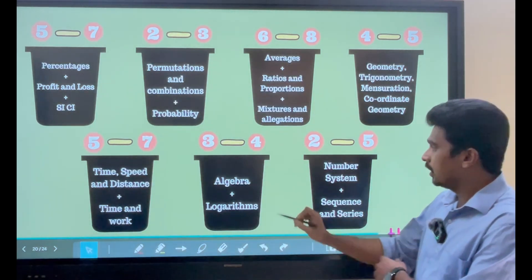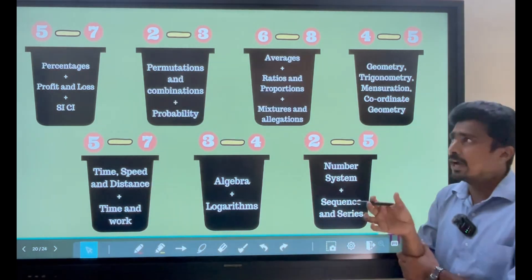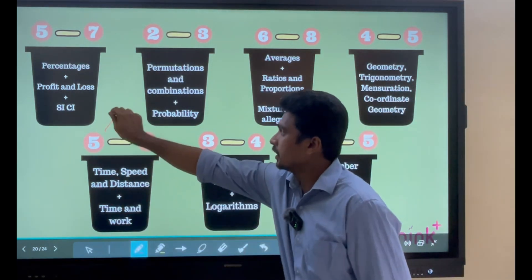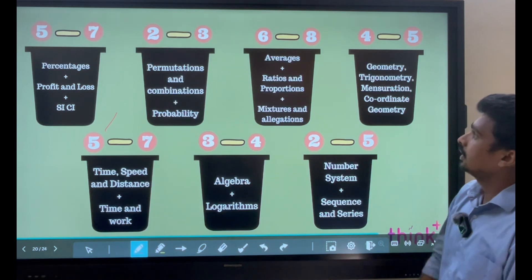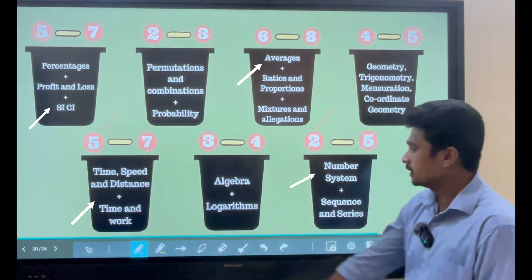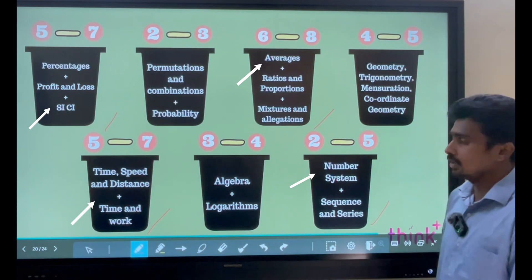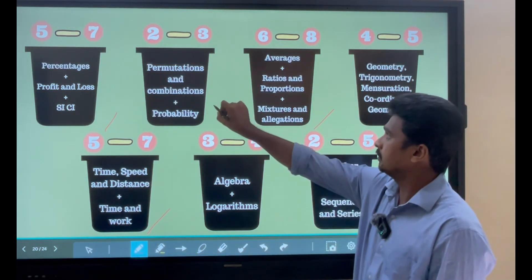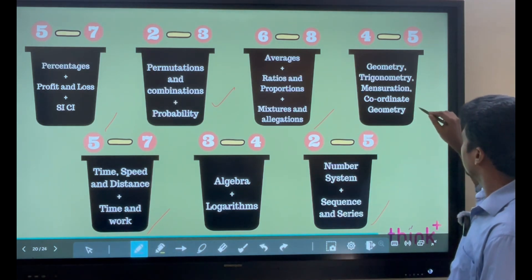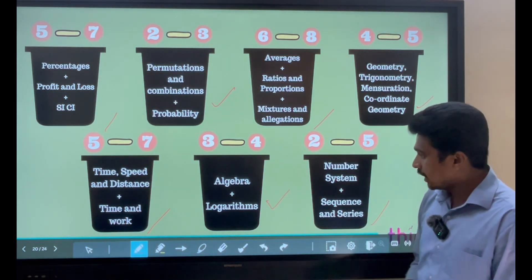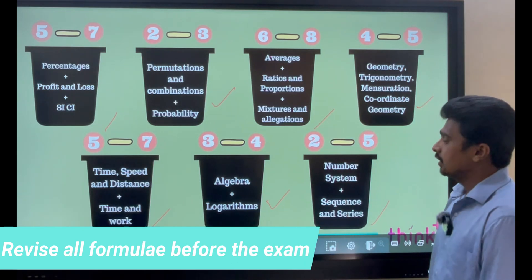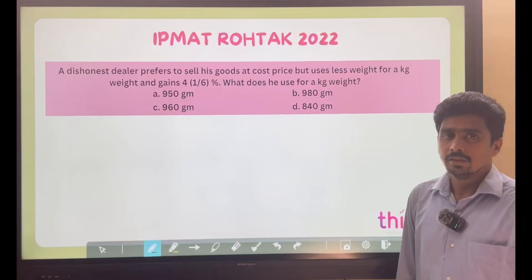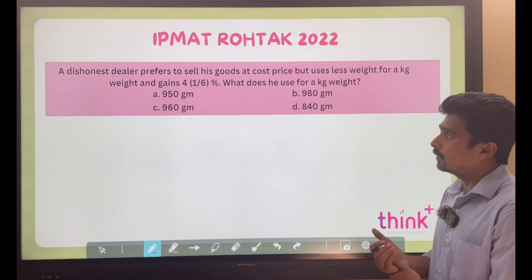If someone is from a non-mathematics background, focus on these 4 buckets: Percentage, Profit and Loss; Averages, Ratio, Proportion, Variation; Time, Speed and Distance; and Number Systems. If someone is from a mathematics background, this is an edge for you — you've already learned these at the intermediate level, so take it as an advantage. Please make sure you revise all the formulas before the exam. Now let's look at an original IPMAT Rohtak 2022 question.